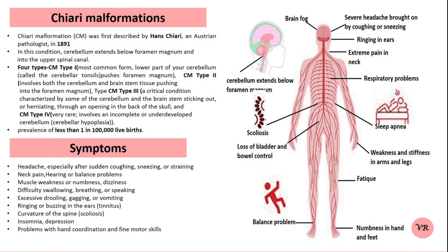Hello viewers, welcome to my channel Human Diseases and Genes. Today I will discuss Chiari Malformation. Chiari Malformation was first described by Hans Chiari, an Austrian pathologist in 1891. He published his findings on the condition, which is now named after him, in a paper where he documented several types of abnormalities of the brain structure.